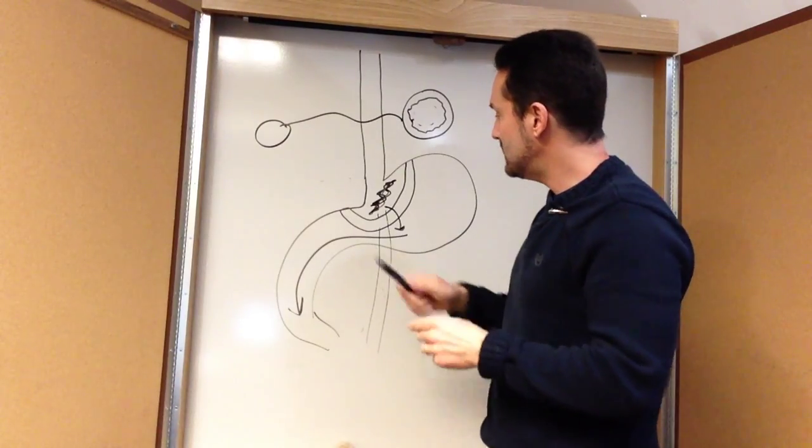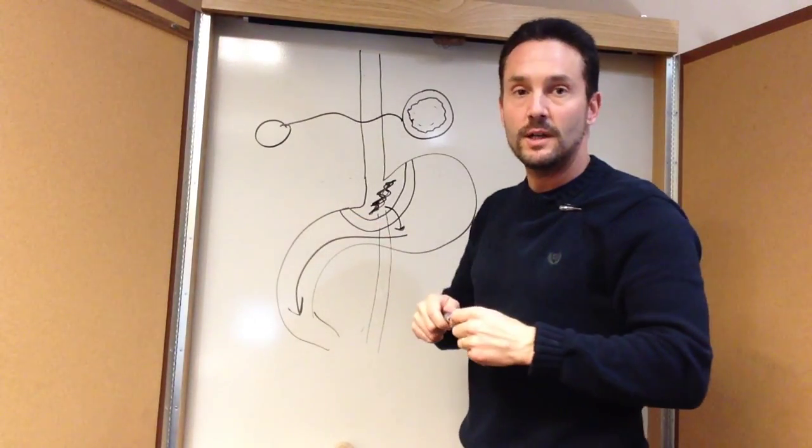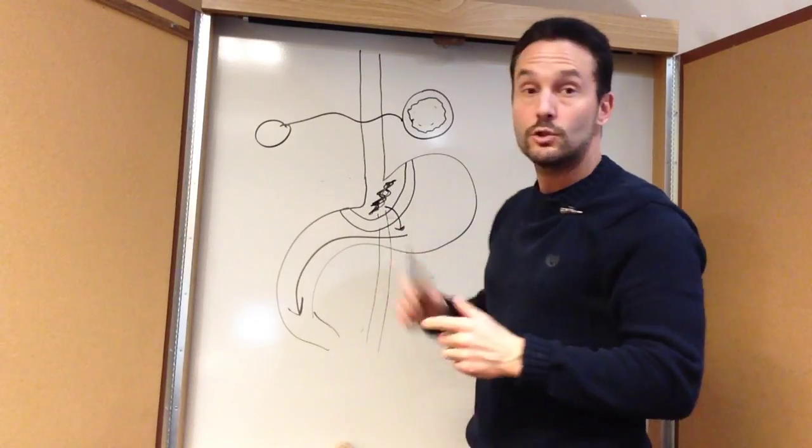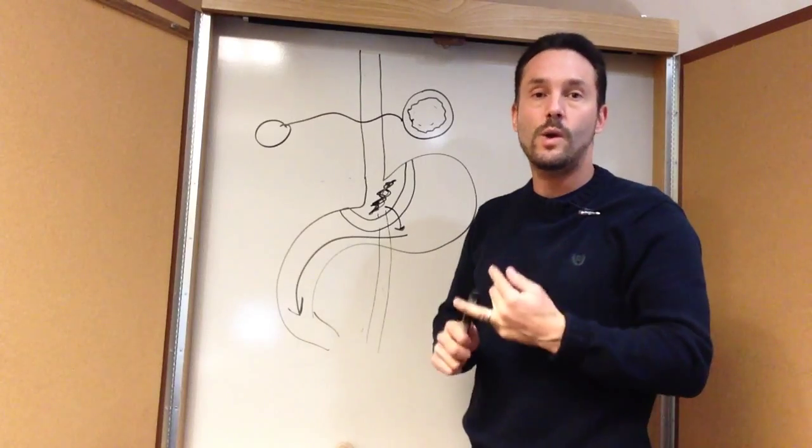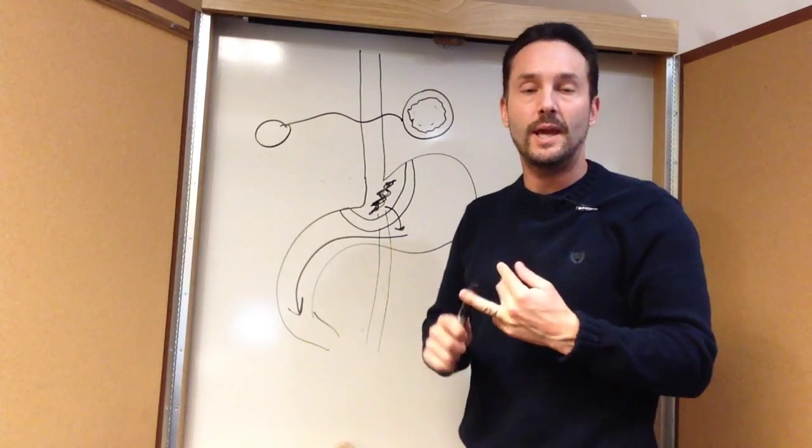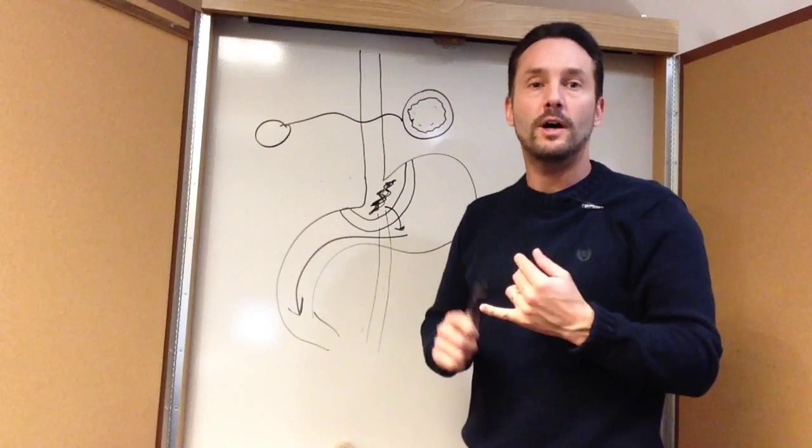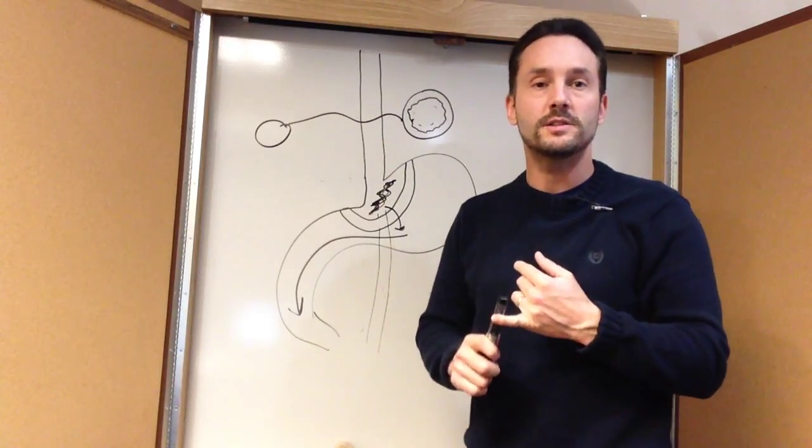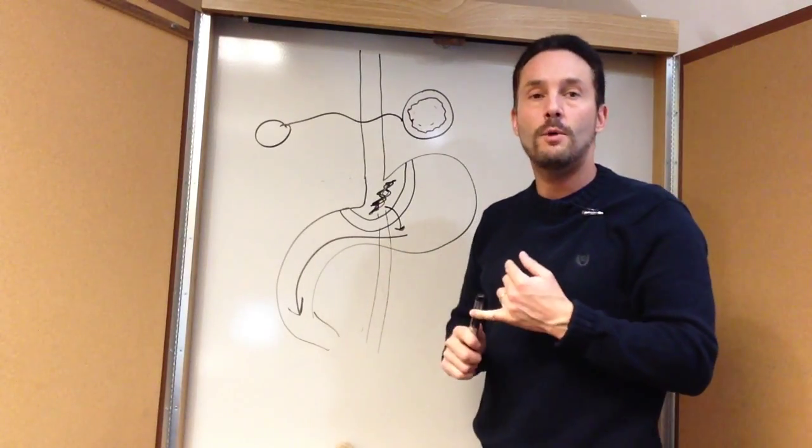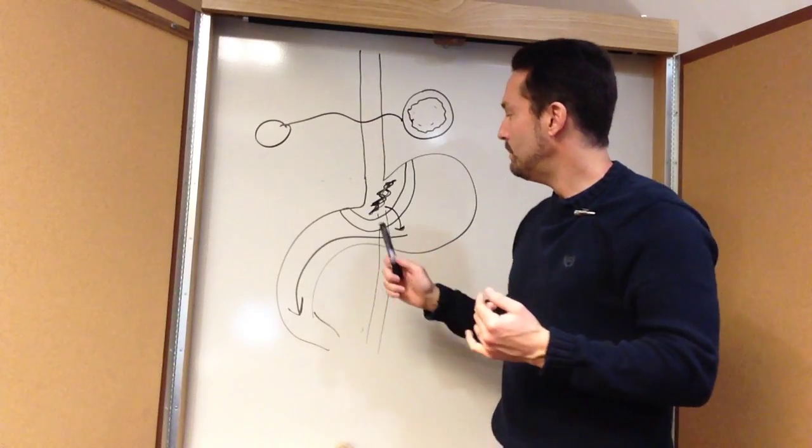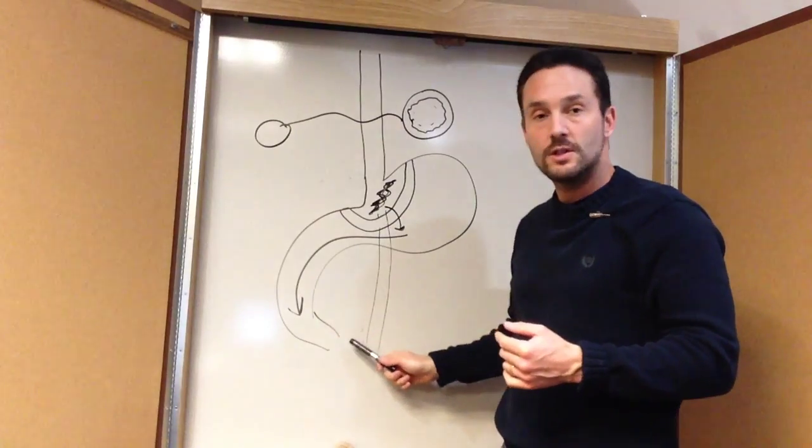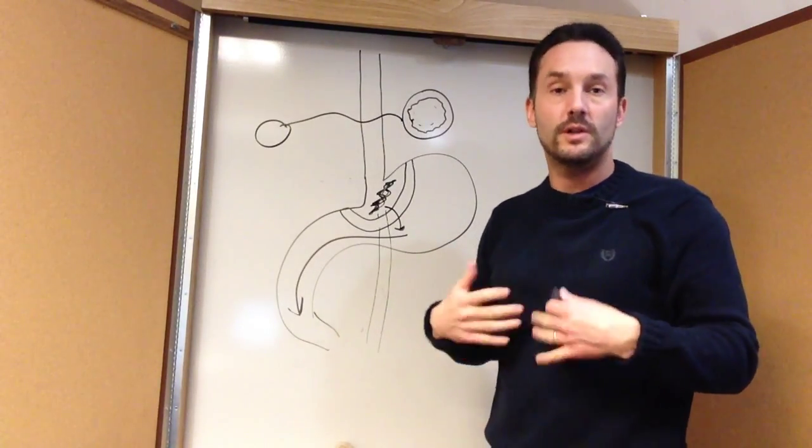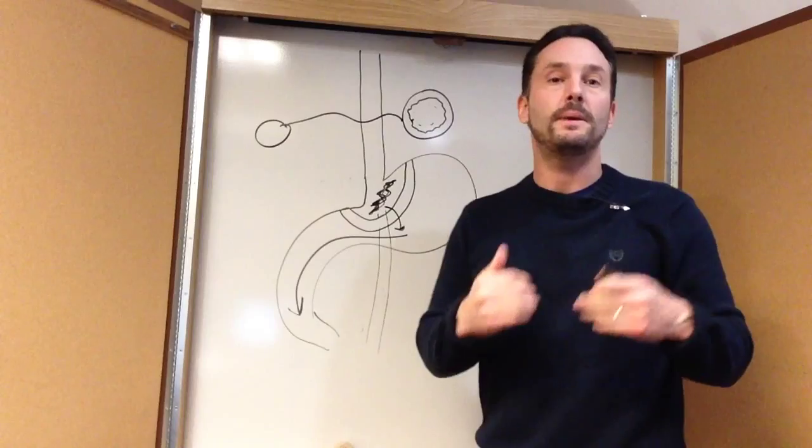So where this is significantly different is that it turns out that when we do a gastric bypass, diabetes and weight control actually is greater almost initially, and you can't explain that because of weight loss because in the first month you have not lost a lot of weight. There's a hormone called GLP-1, and what GLP-1 normally does is when you eat food and the food is presented to the intestine, your intestines actually release GLP-1.